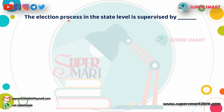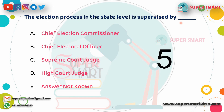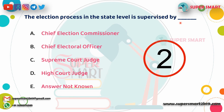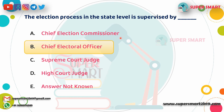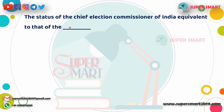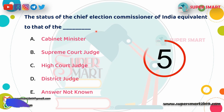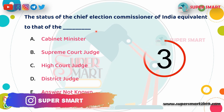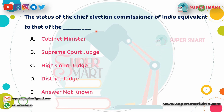The election process at the state level is supervised by the Chief Electoral Officer. The status of the Chief Election Commissioner of India is equivalent to that of a Supreme Court judge.